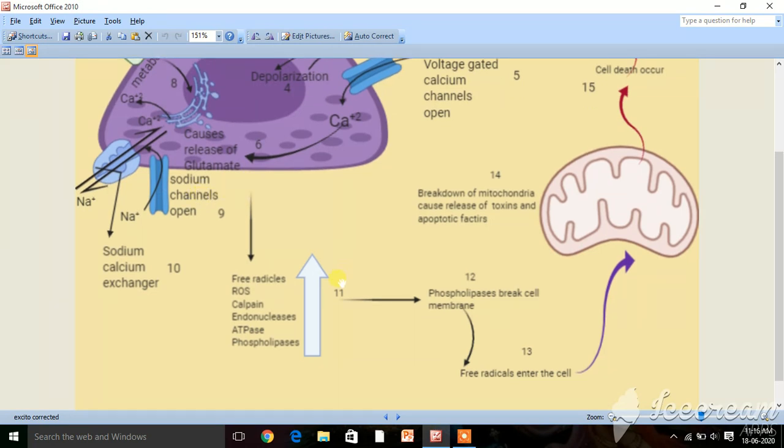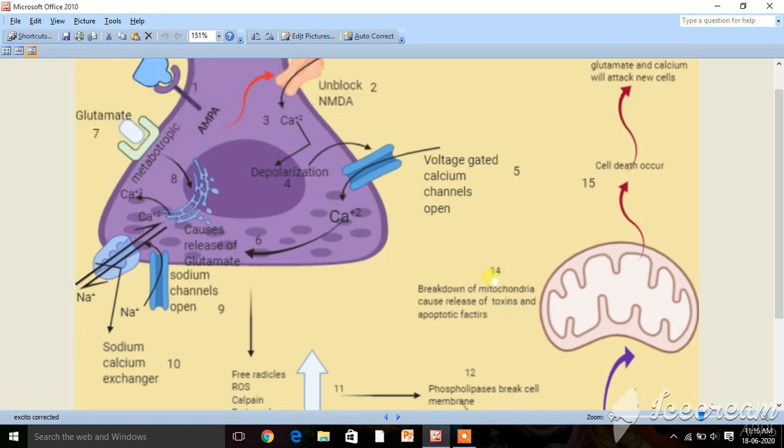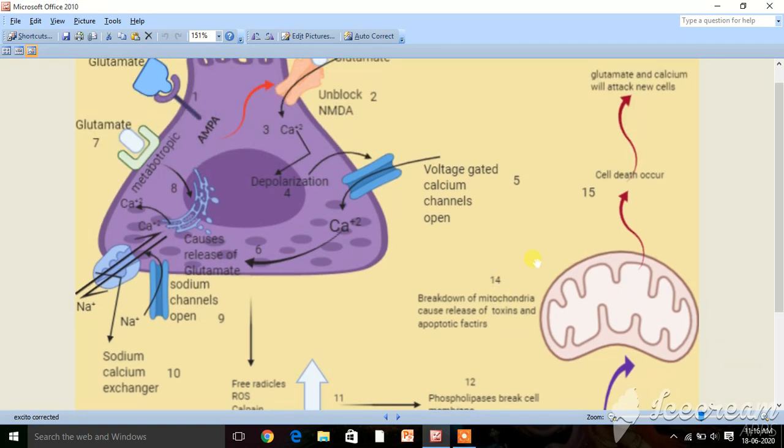As you can see here, in the 11th and 12th steps, these phospholipases break the cell membrane of the neuron. So due to breakage of the cell membrane, a lot of free radicals enter the cell. These free radicals will attack the mitochondria and cause destruction of the mitochondria.